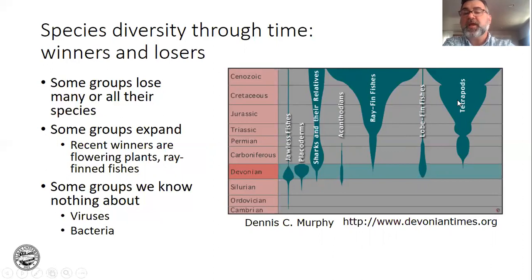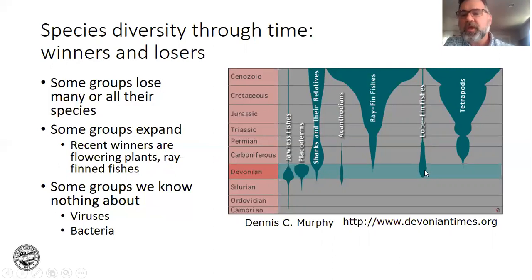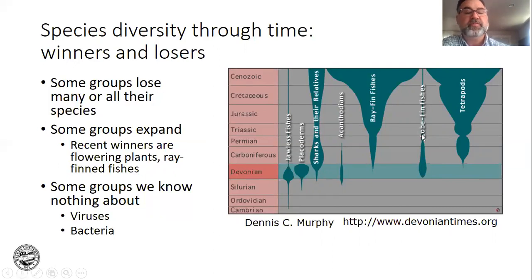Tetrapods — things like mammals, birds, turtles, snakes, and lizards — have been increasing over time as well. The lobe-finned fishes are the ancestors of the tetrapods; they had their heyday in the Devonian and largely went extinct, with a few exceptions, most notably the coelacanth and the lungfish, both lobe-finned fishes.